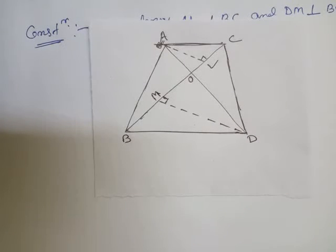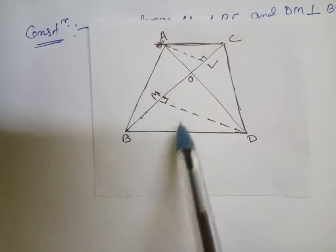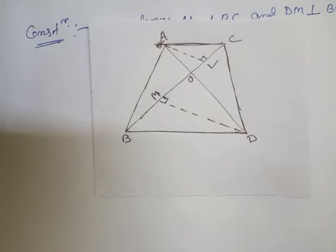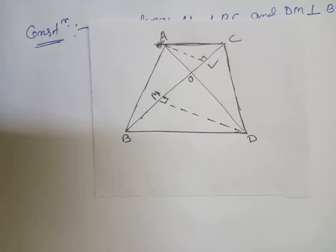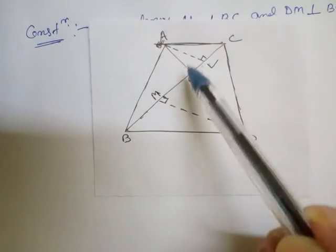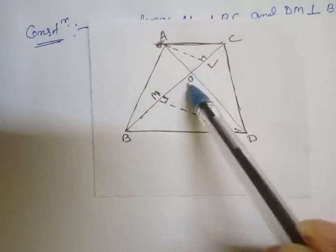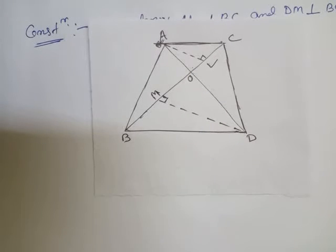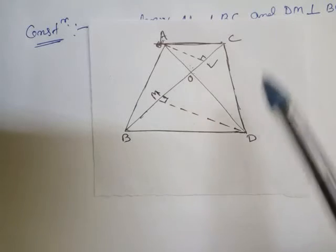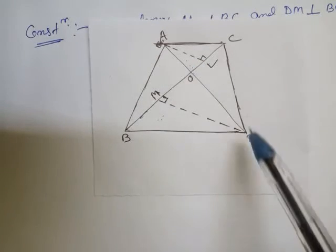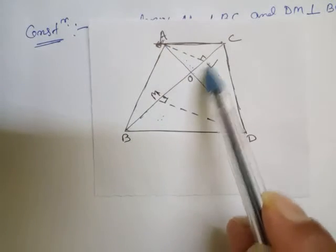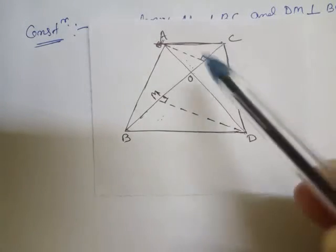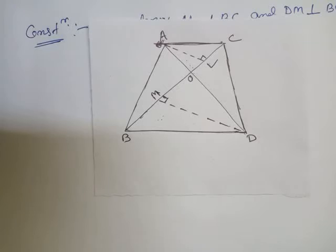Now look at the proof part. In triangles ALO and DMO, angle ALO and angle DMO are each 90 degrees. Also, angle AOL and angle DOM are vertically opposite angles.